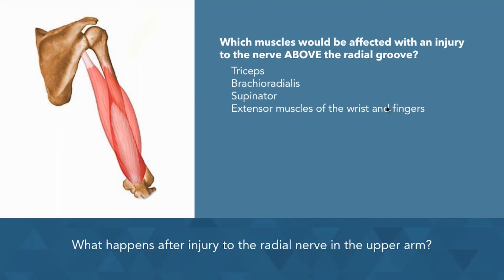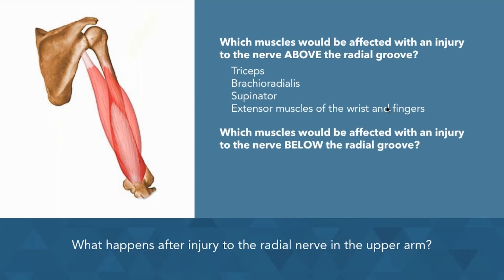Now here's the tricky part. If asked which muscles would be affected with injury to the nerve below the radial groove, you'd need to think a little bit more about the anatomy. When the radial nerve is injured in the radial groove, the triceps is usually not completely paralyzed. Rather, it's weakened because only the medial head is affected. However, the muscles in the posterior compartment of the forearm that are supplied by the more distal branches of the radial nerve are paralyzed.